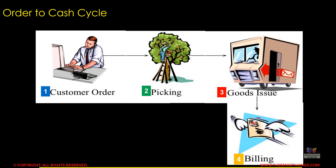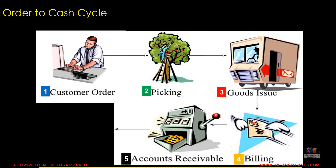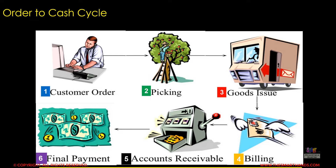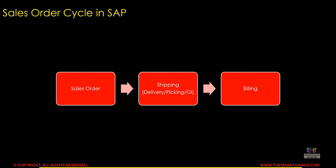The third step is billing — after sending the goods, we send the invoice or bill to the customer, and our accounts receivable department chases for payment. Once the customer pays the amount to our company, the order-to-cash cycle is complete. This is a standard six-step order-to-cash cycle.